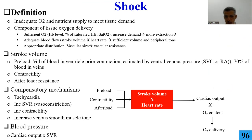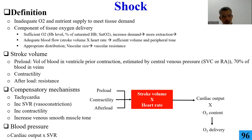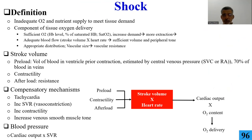Any questions? The instructor moves quickly as these topics will be covered in future sessions. Moving on: shock is defined as inadequate oxygen delivery to the body to meet tissue demand. The components of tissue oxygenation include oxygen, hemoglobin level, and the percentage of hemoglobin carrying oxygen.